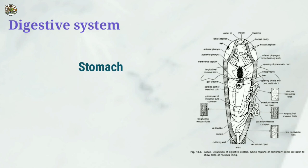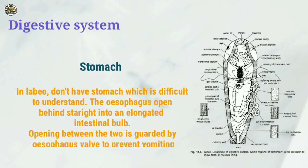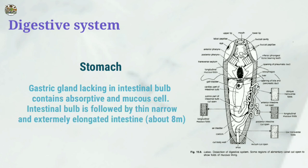In Labeo, there is no stomach, which is unusual. The oesophagus opens directly behind into an elongated intestinal bulb. The opening between the two is guarded by an oesophageal valve to prevent vomiting. Gastric glands are lacking; the intestinal bulb contains absorptive and mucous cells.